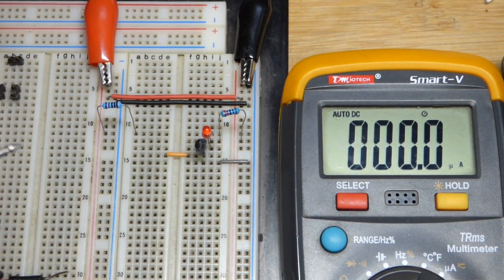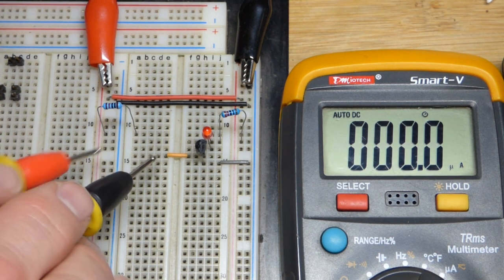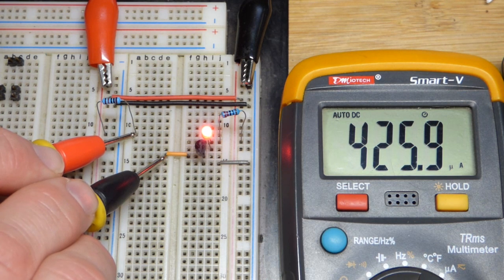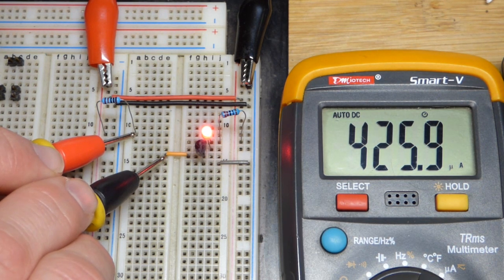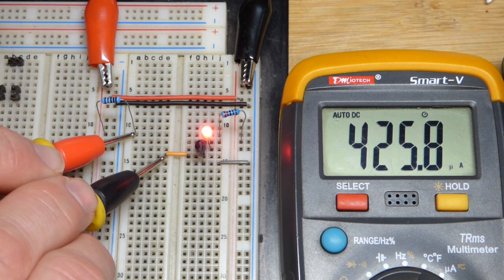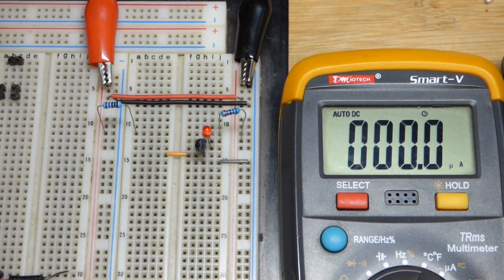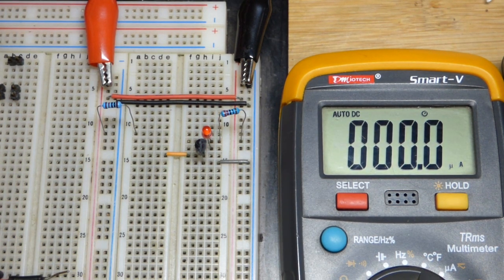But we'll go to the microamp range and take that measurement. So we can do that right there, and there you can see maybe a spec higher. It's still about 0.42 milliamps, which is the same as 420 microamps, so pretty much spot on.